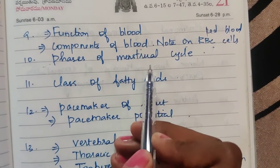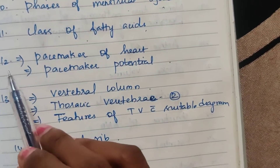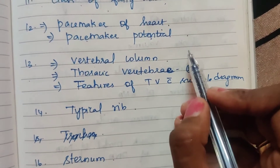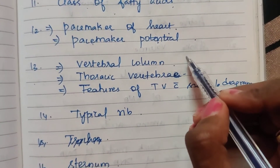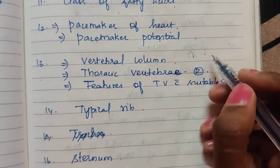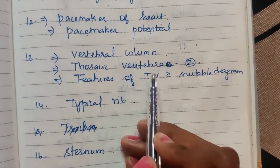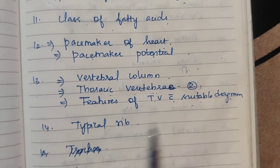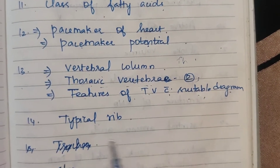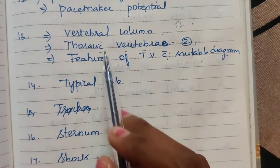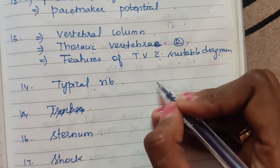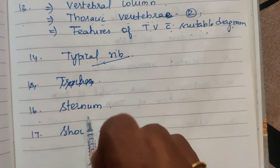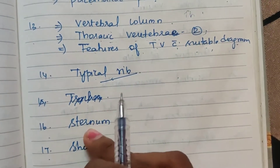Tenth one: phases of the menstrual cycle. Eleventh one: classification of fatty acids. Twelfth one: pacemaker of the heart and pacemaker potential. Thirteenth one: vertebral column — thoracic, cervical, and lumbar regions presented with diagrams. Features of thoracic vertebrae with a suitable diagram — appears two times. Fourteenth one: typical rib — typical and atypical, there are two types of ribs — explain typical rib.